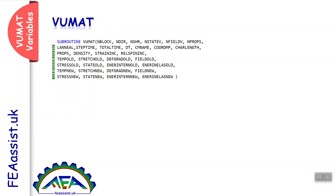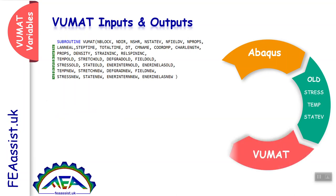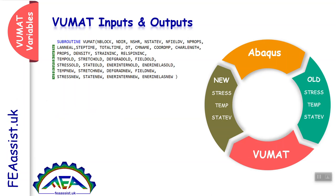The important thing about learning the VUMAT subroutine is its inputs and outputs. VUMAT has some variables: some are inputs from Abaqus. In VUMAT, we process the inputs and export the processed results as output. These variables are computed in Abaqus — the old values or initial values are transferred to VUMAT. Inside VUMAT, we write new equations to redefine these values, and the new values are returned back to Abaqus. This is how Abaqus and VUMAT interact with each other.